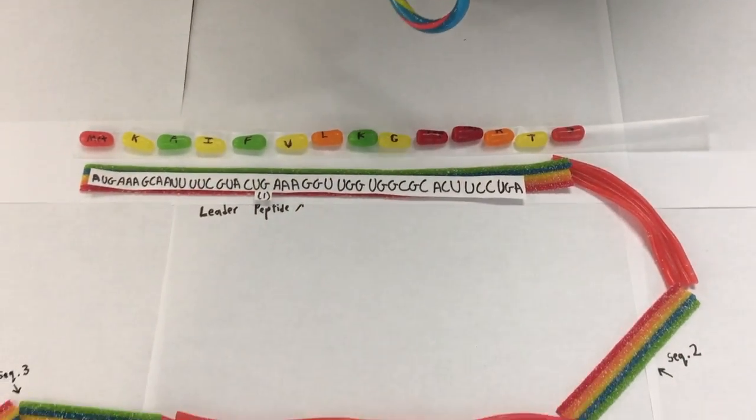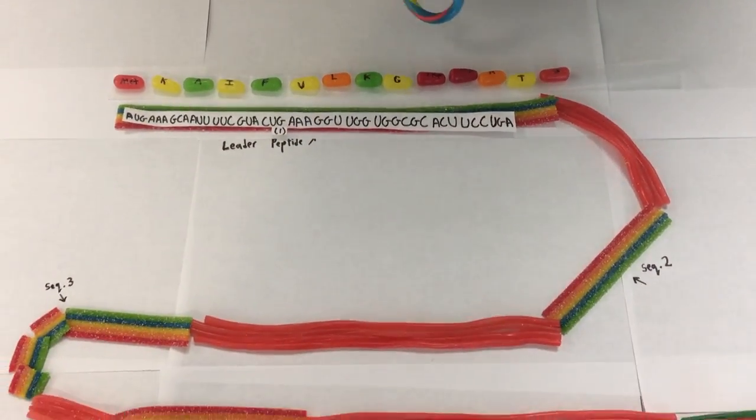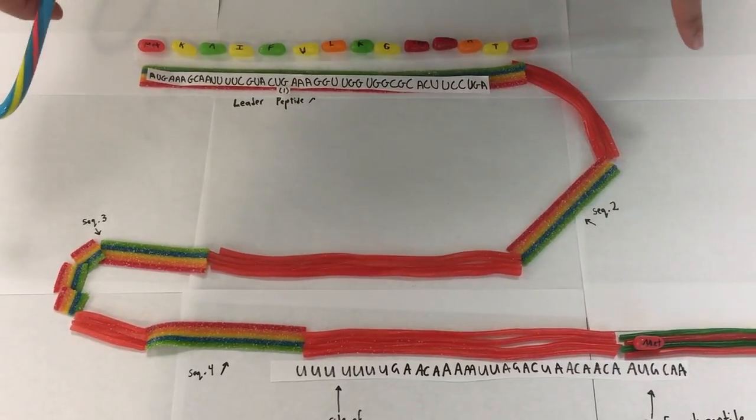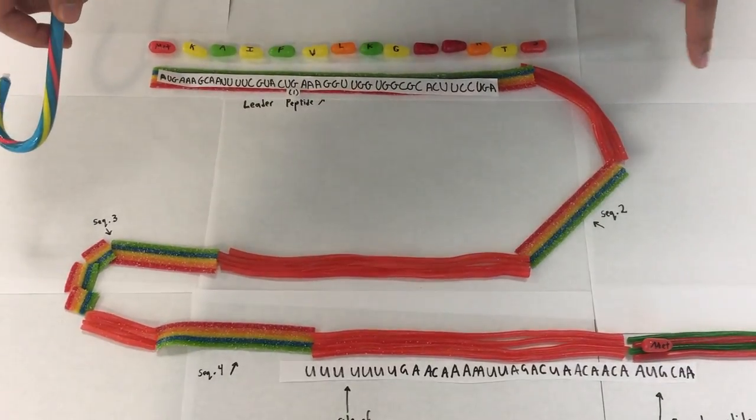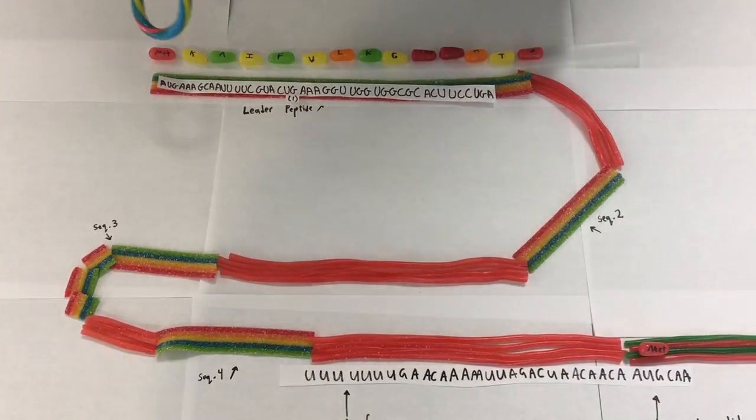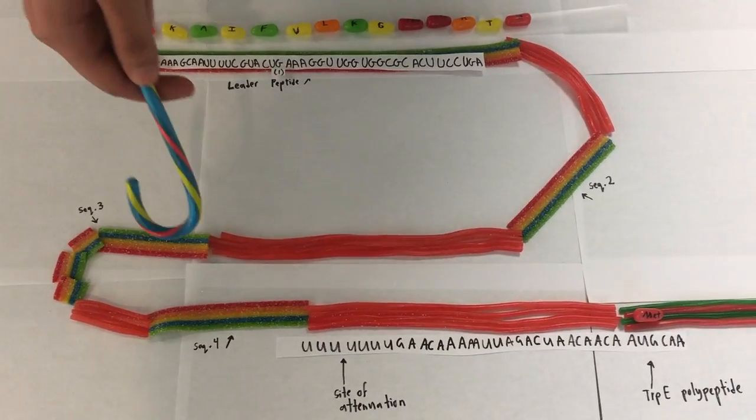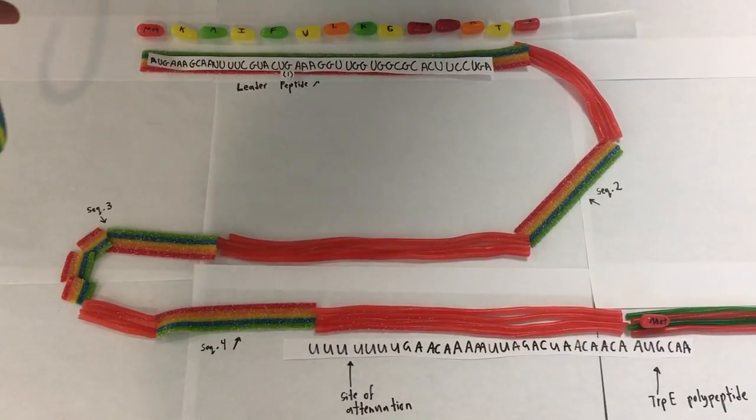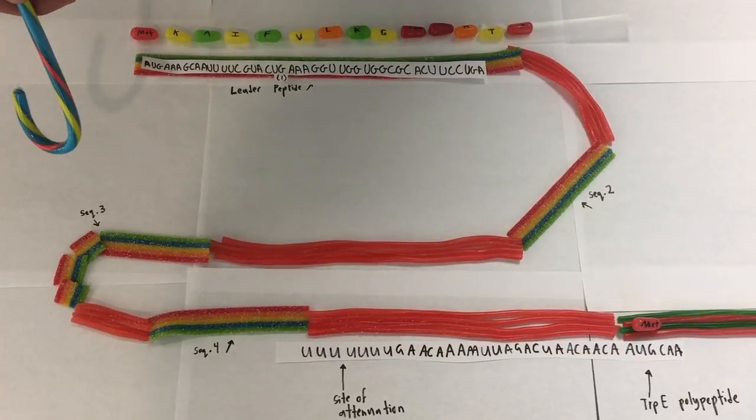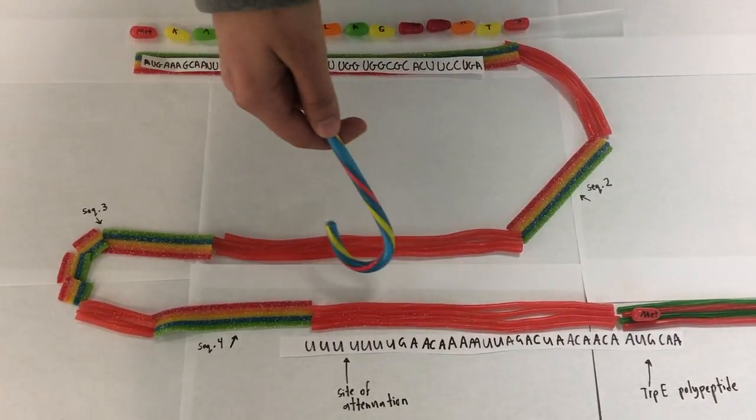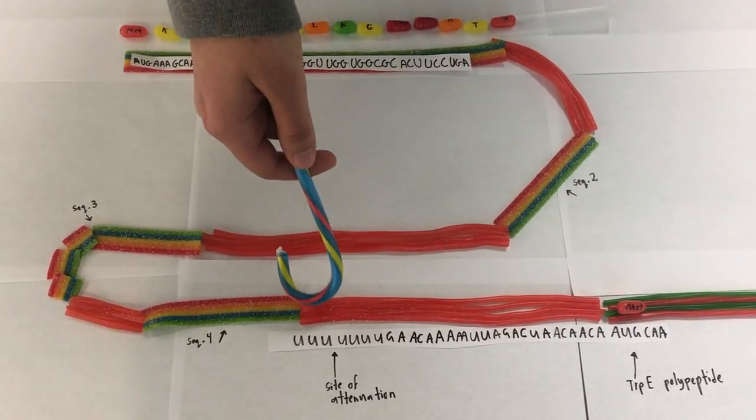However, when tryptophan levels are extremely low, the ribosome will stall at these two codons. Sequences 2 and 3 are complementary and will form a secondary structure, which would prevent attenuation from occurring. Sequences 3 and 4 are also complementary and will bind to form a secondary structure involving a GC hairpin, followed by a poly-U, which is where the site of attenuation is.